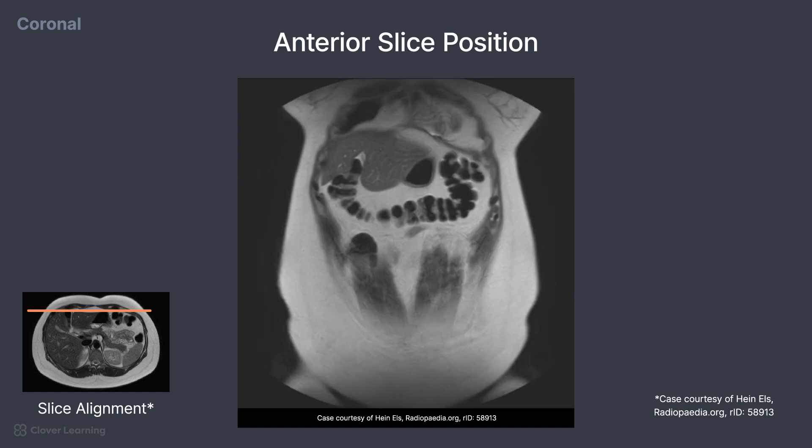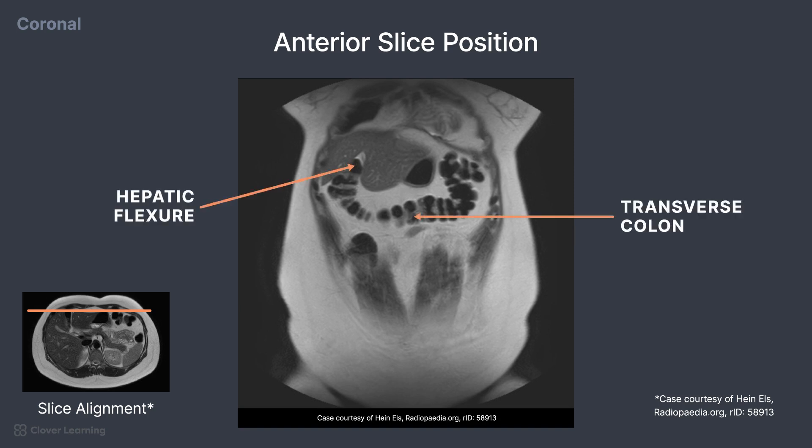On this slice, we begin to move into the abdominal cavity. The dark area through the center of the image is the transverse colon with the hepatic flexure, visible near the liver,